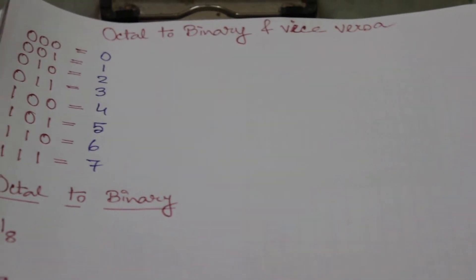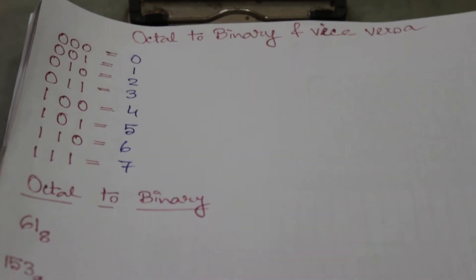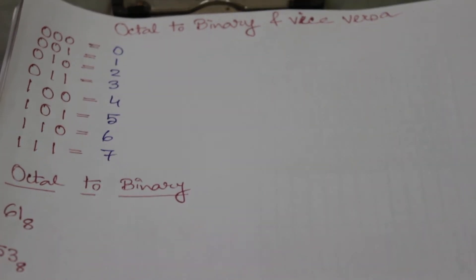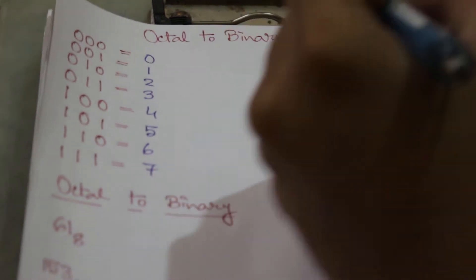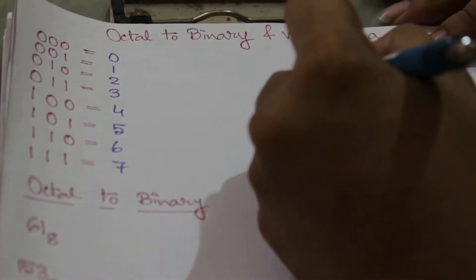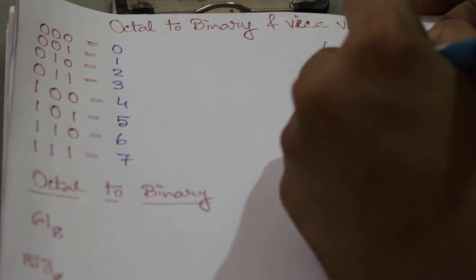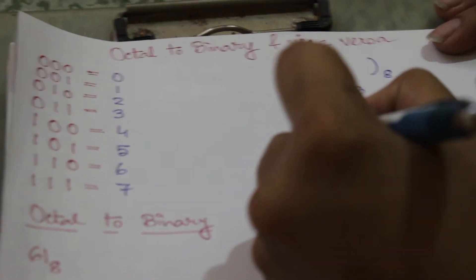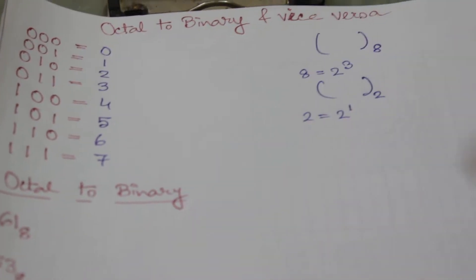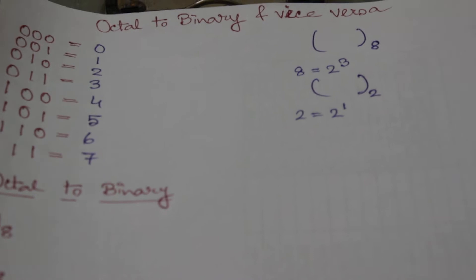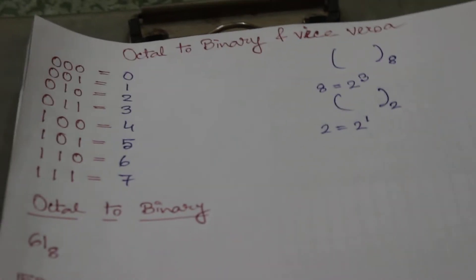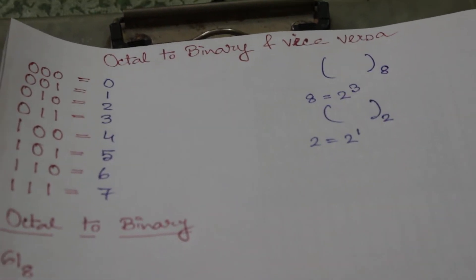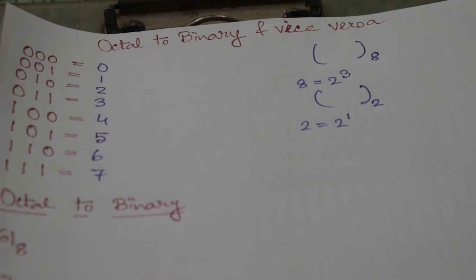So let's start. Octal means 8, so the radix will be 8. Now 8 is 2 cube and binary has radix 2. 2 is 2 to the power 1, so we can write a binary number, we can split it with three digits and put the corresponding octal number there.